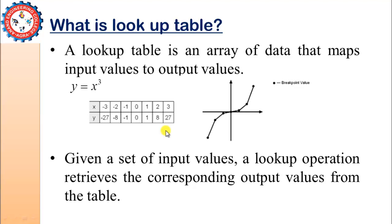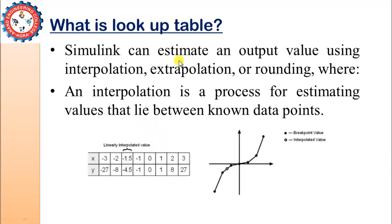This is the graph for this data. Here X is the input data and Y is the output data. Y is called the table data and X is called the breakpoints. Whatever value of X is provided, at that point we have some value of Y, and in between we are just estimating the values. So whenever you provide any value of X you can retrieve the corresponding value of Y from the lookup table.